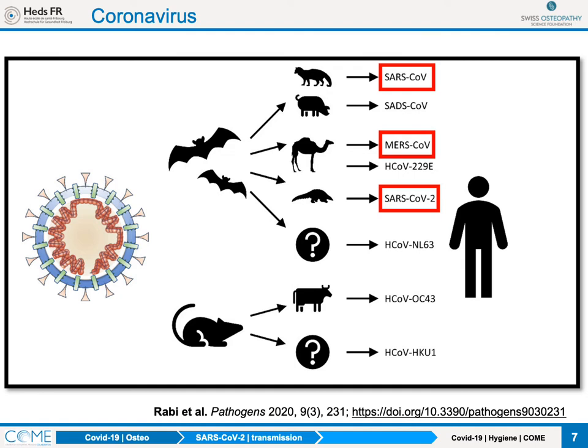We've had many coronaviruses before — it's quite well known in life forms. However, quite seldomly it shifts over to humans, and then it can be more or less devastating depending on where it attacks and what it does. This is why it's important to know what's specific about SARS-CoV-2.